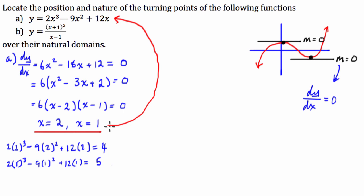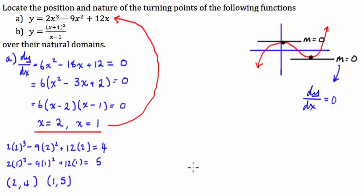So our two points for this function are going to be (2, 4) and (1, 5). Now we have to work out what the nature of the turning points are — we need to decipher whether each is a local maximum or a local minimum. The way I like to do this is using the second derivative test.